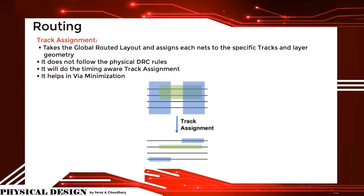Track assignment takes the global routed layout and assigns each net to a specific track and layer geometry. It does not follow the physical DRC rules. It performs timing-aware track assignments and helps in via minimization.